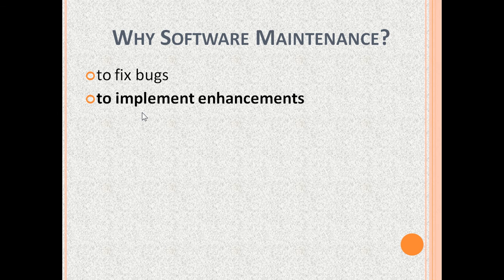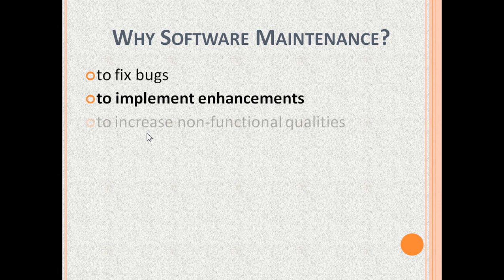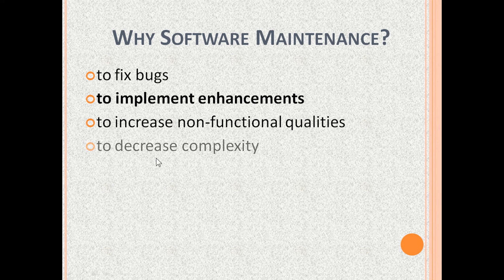To implement enhancements required by users or new regulations — different sources say that this is the largest percentage of work in software maintenance. To increase non-functional qualities like performance, security, usability and design of the software. Software maintenance is also required to decrease software complexity, for example by code refactoring or data refactoring. Enhancing the software by implementing enhancements, increasing non-functional qualities and decreasing the complexity is also called perfective maintenance.